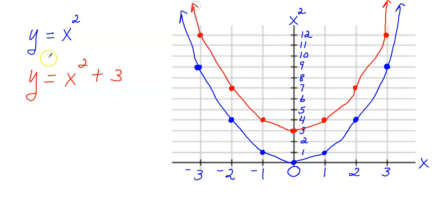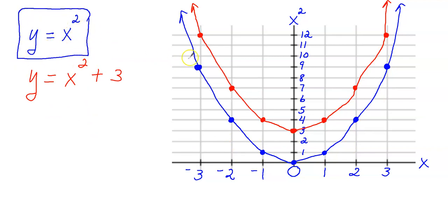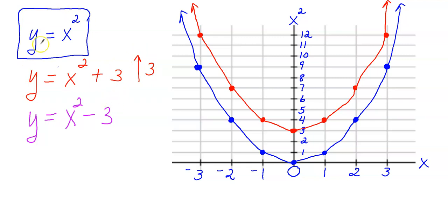If you had to describe this transformation, you would say that the parent function in blue, y equals x squared, was translated up 3 units. Now, if I wanted to translate the graph down 3 units, I would subtract 3 from the x squared value. So x squared plus 3 moves it up 3 units, and x squared minus 3 moves the parent function down 3 units.